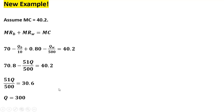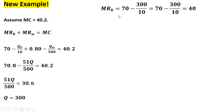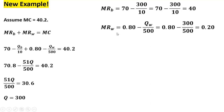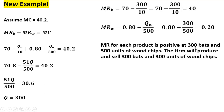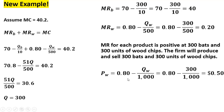Taking this Q equals 300 and evaluating each marginal revenue equation separately: the marginal revenue of baseball bats at Q equals 300 is positive, and the marginal revenue of wood chips at 300 units is also positive. So in this case we produce and sell 300 baseball bats and 300 units of wood chips — both marginal revenues are positive. The price of wood chips at 300 units is 50 cents, and baseball bats in this example sell at $55 each.